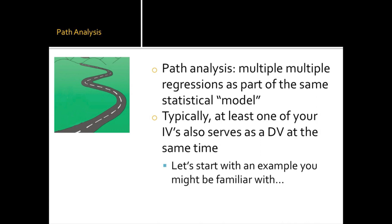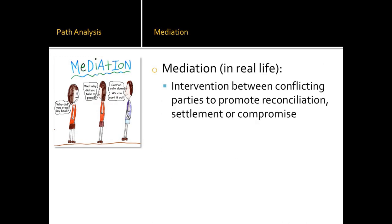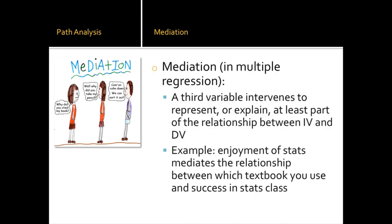That's the typical path analysis example. Let's start with one you might be familiar with: mediation. In real life, a mediator is someone or something that comes in between two conflicting parties. In regression, we have a third variable that intervenes to represent or explain at least part of the relationship between IV and DV. What I did for my master's degree was run a statistical model to test whether enjoyment was a mediator of academic success — enjoyment of stats mediating the relationship between which textbook you use and success in stats class.